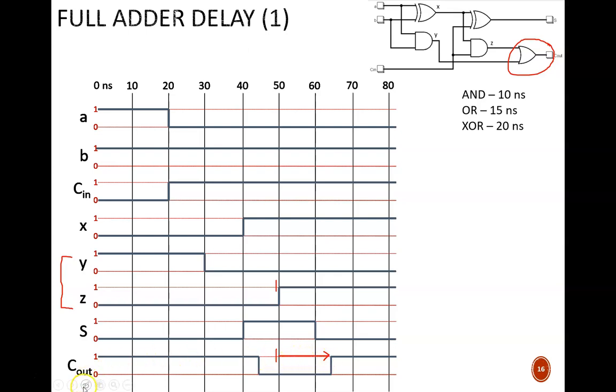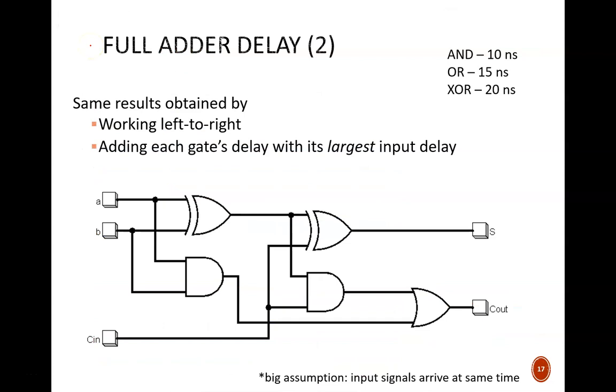For the overall delay, remember that we must compute this from the point when the inputs change, which here is time 20 nanoseconds. Output signal S requires 40 nanoseconds before it reaches its final value. And C out requires 45 nanoseconds. The overall propagation delay is the larger of these two, so 45 nanoseconds. Any time we use this full adder circuit, we should wait at least 45 nanoseconds before reading the output values. The timing diagram is an excellent tool for seeing how the propagation delays work their way through the circuit.